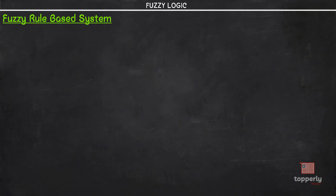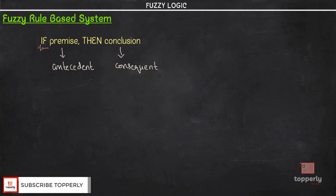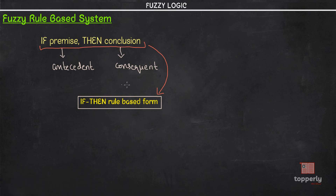From the previous lectures, we have studied the implication: if premise then conclusion, where the premise is also known as the hypothesis or the antecedent, and the conclusion is also known as the consequent. This type of expression is commonly referred to as the if-then rule-based form. What it means is that if we know a particular fact — a premise, hypothesis, or antecedent — then we can infer or derive another fact, which is our conclusion or consequent.